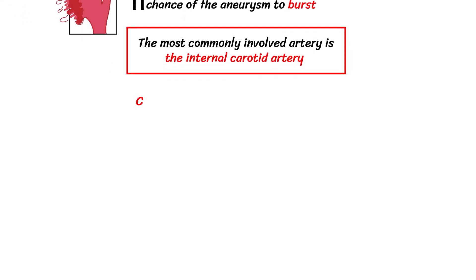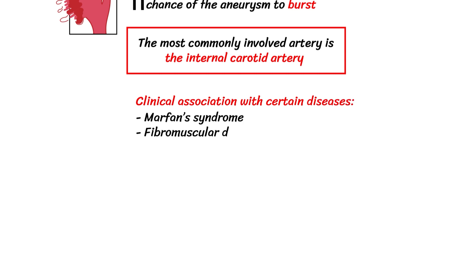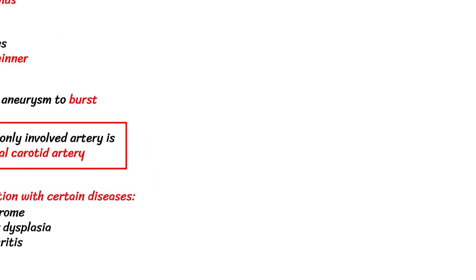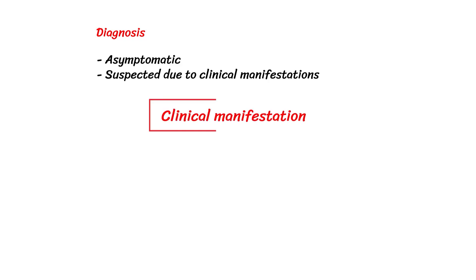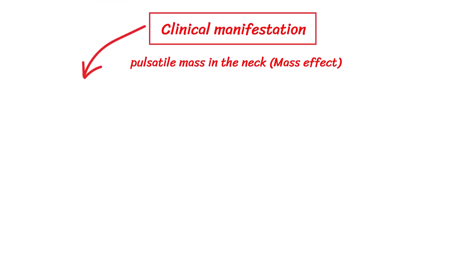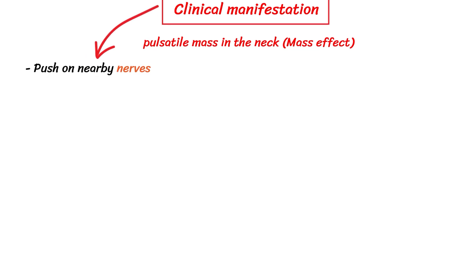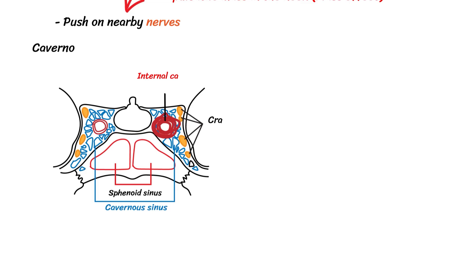Carotid artery aneurysms can be associated with certain diseases, including Marfan syndrome, fibromuscular dysplasia, and giant cell arteritis. Diagnosis may be made incidentally in asymptomatic patients or suspected due to clinical manifestations. These include the presence of a pulsatile mass in the neck, or a mass effect where the aneurysm pushes against nearby nerves — for example, in the cavernous sinus, it can push against nerves causing ophthalmoplegia.